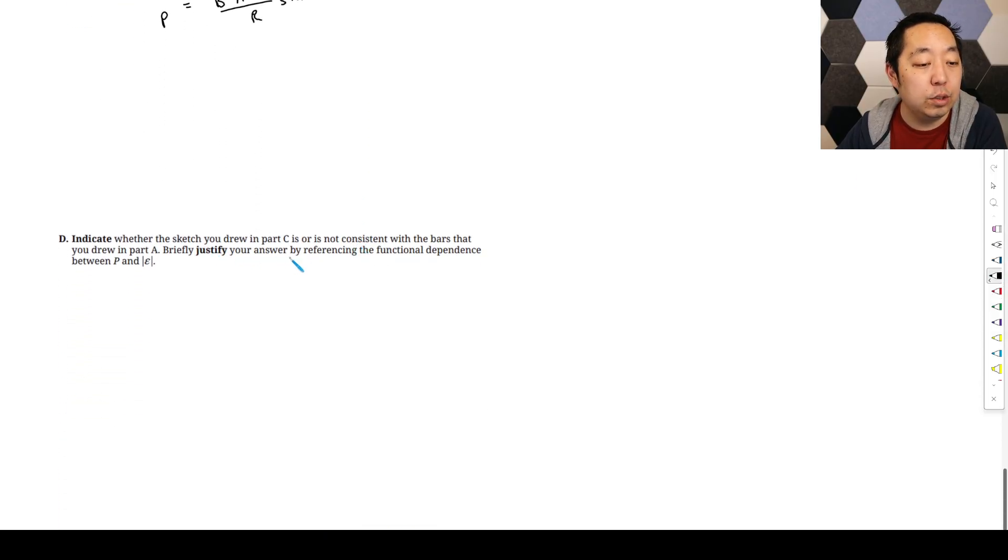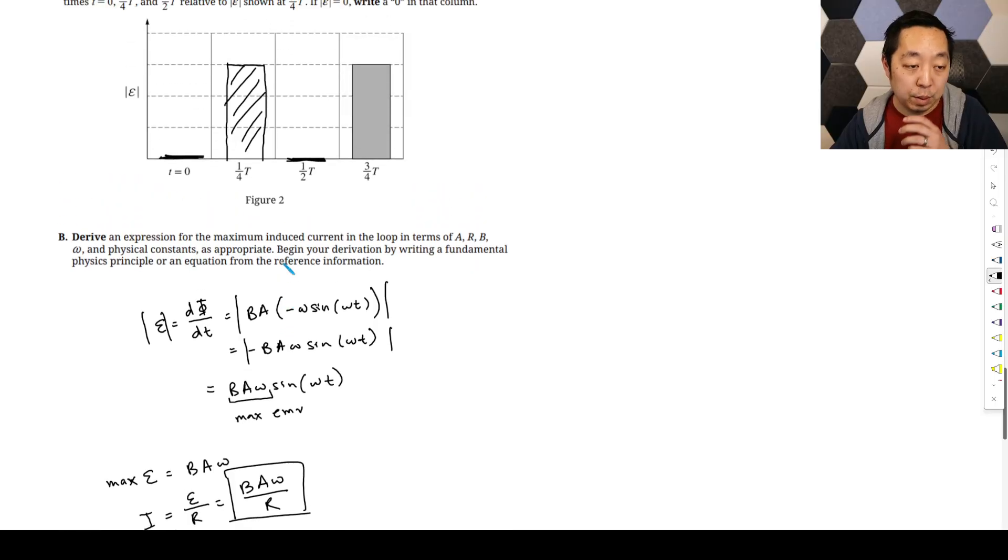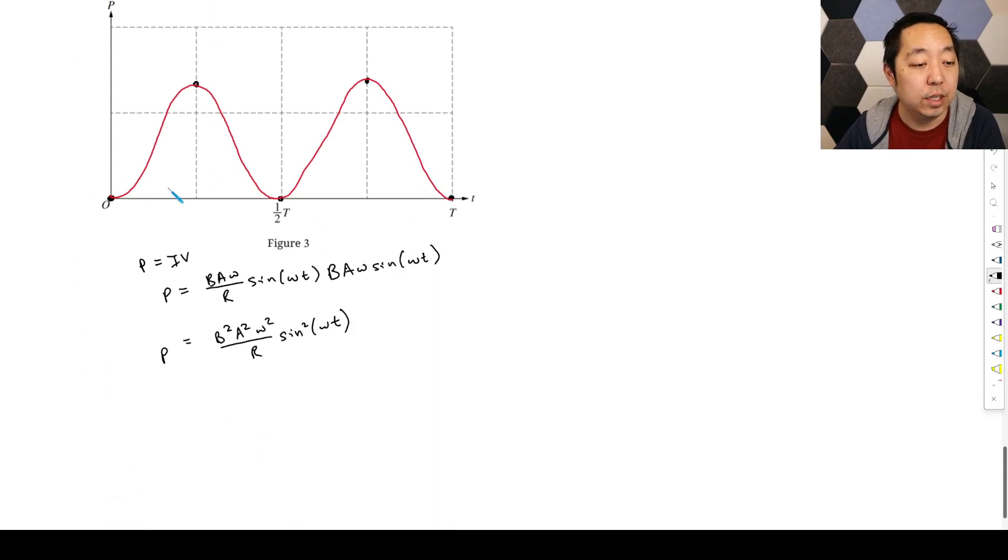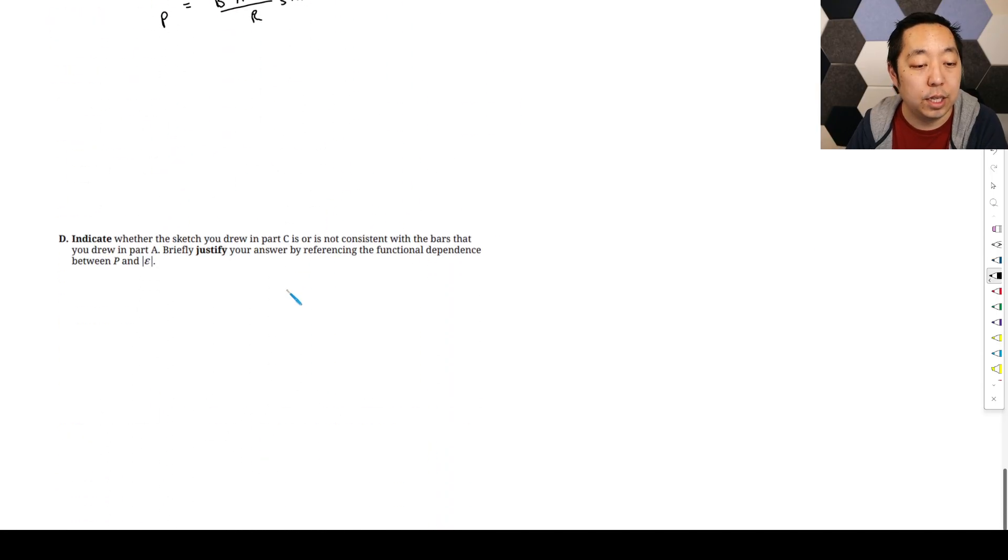Indicate whether the sketch you drew in part C is or is not consistent with the bars that you drew in part A. Briefly justify your answer by referencing functional dependence between power and epsilon. So this is what we're talking about before, that when the epsilon is zero, the power should be zero. If there's no potential difference, then there's no power. And you can see that at those points. At zero and one half T, the power is zero.